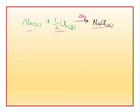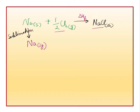Ab hum doosra tariqa dekhenge. Is Na ko hum Na gas mein convert karte hai — Na solid ko agar hum Na gaseous atom mein convert kar paye. Toh yeh jo conversion ho raha hai, is conversion ko hum kya kehte hai? Sublimation — yani solid se direct gas mein convert hona. Toh yahaan par hume energy dheni padti hai. Yeh jo energy hume dheni padti hai, isse hum kehte hai sublimation energy, jisse S se dikhaya hai.